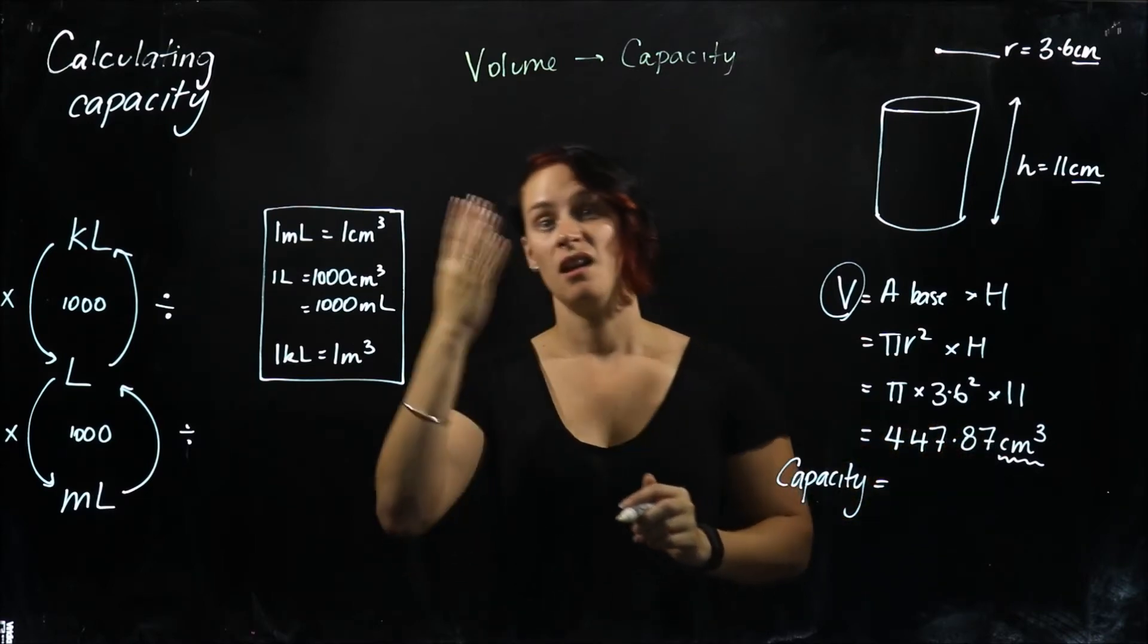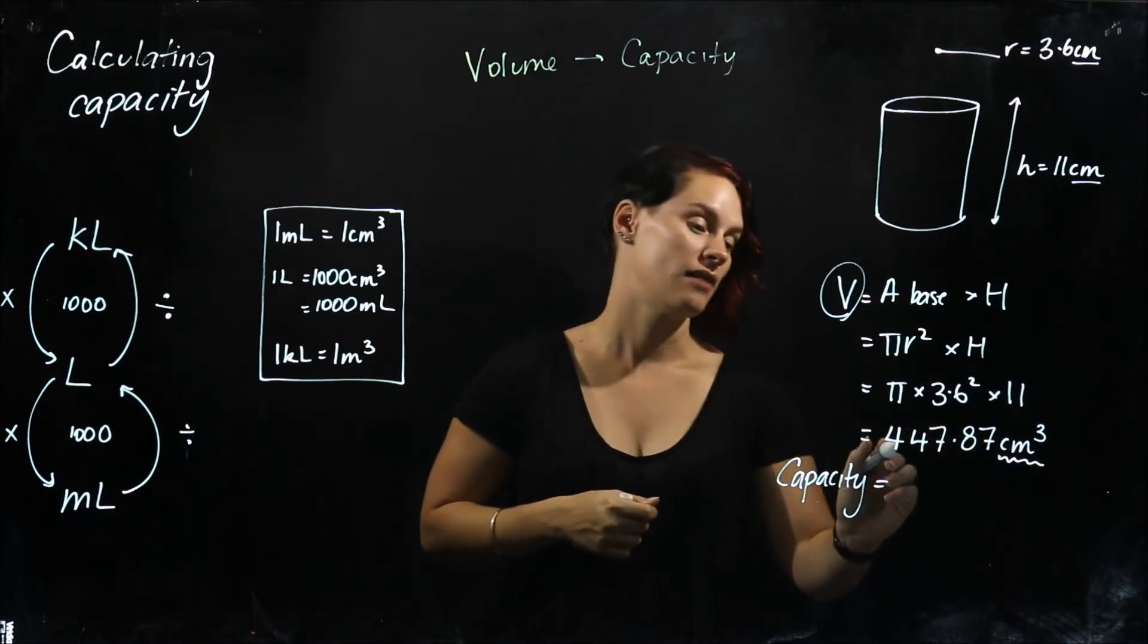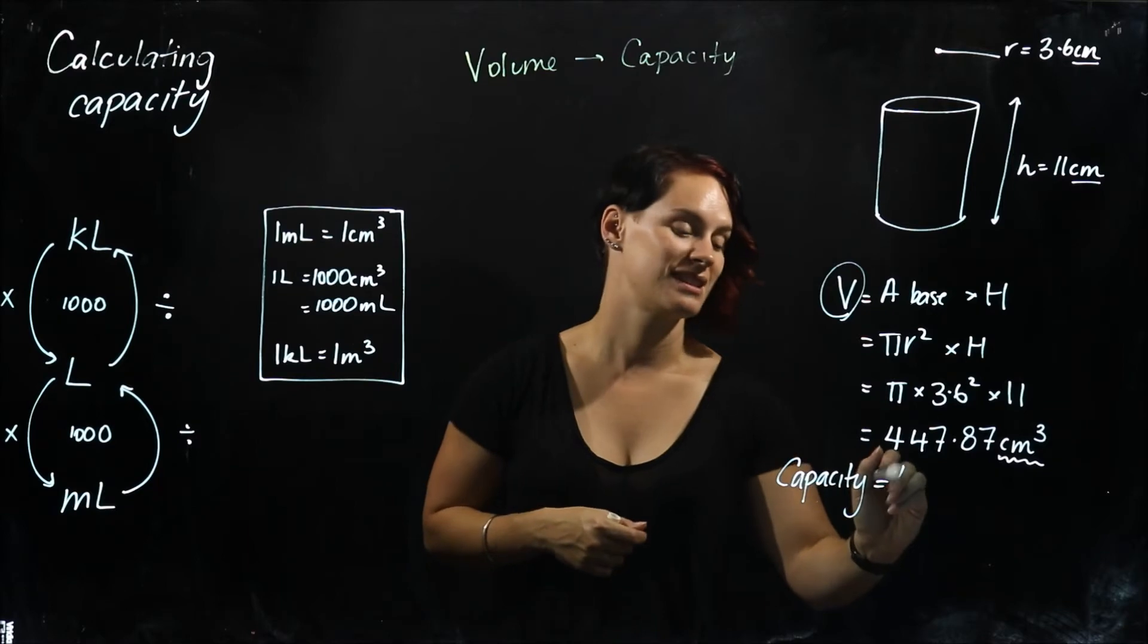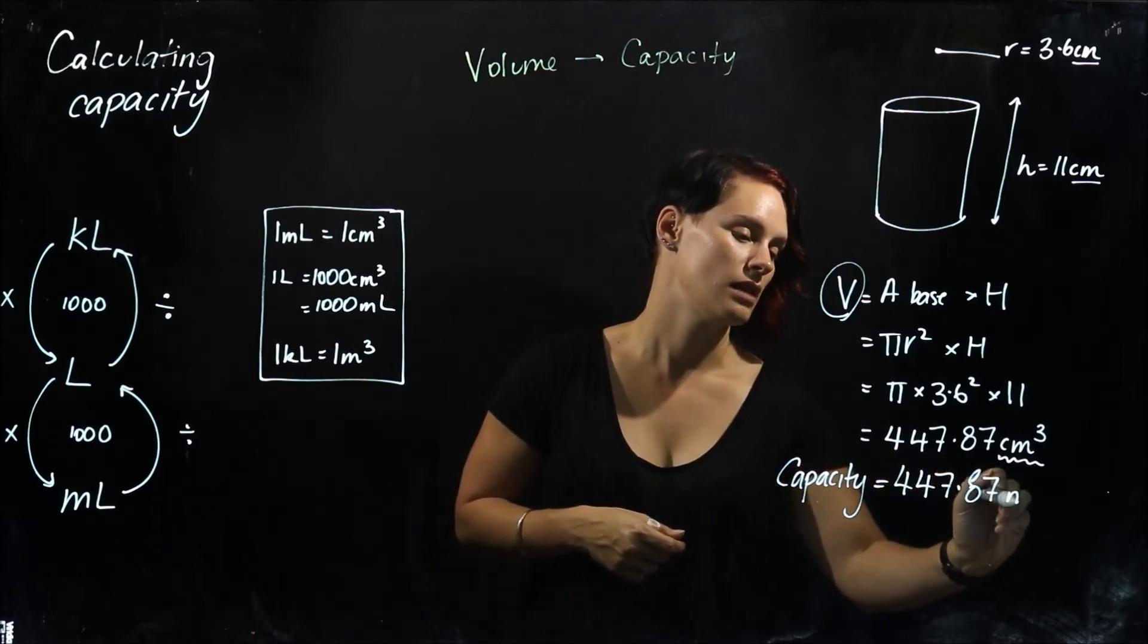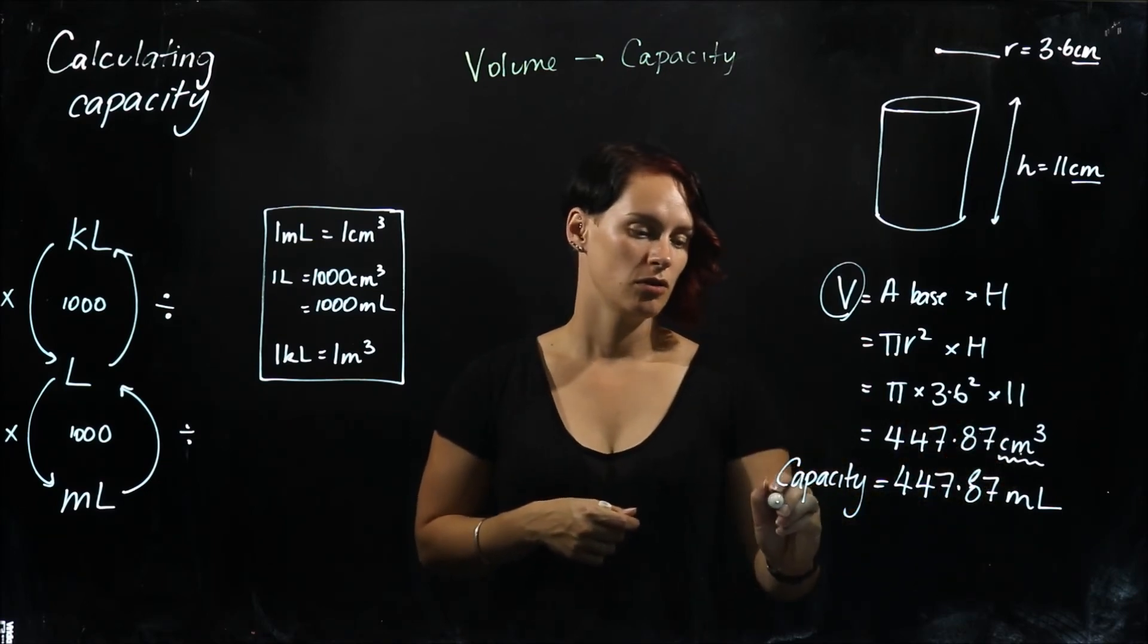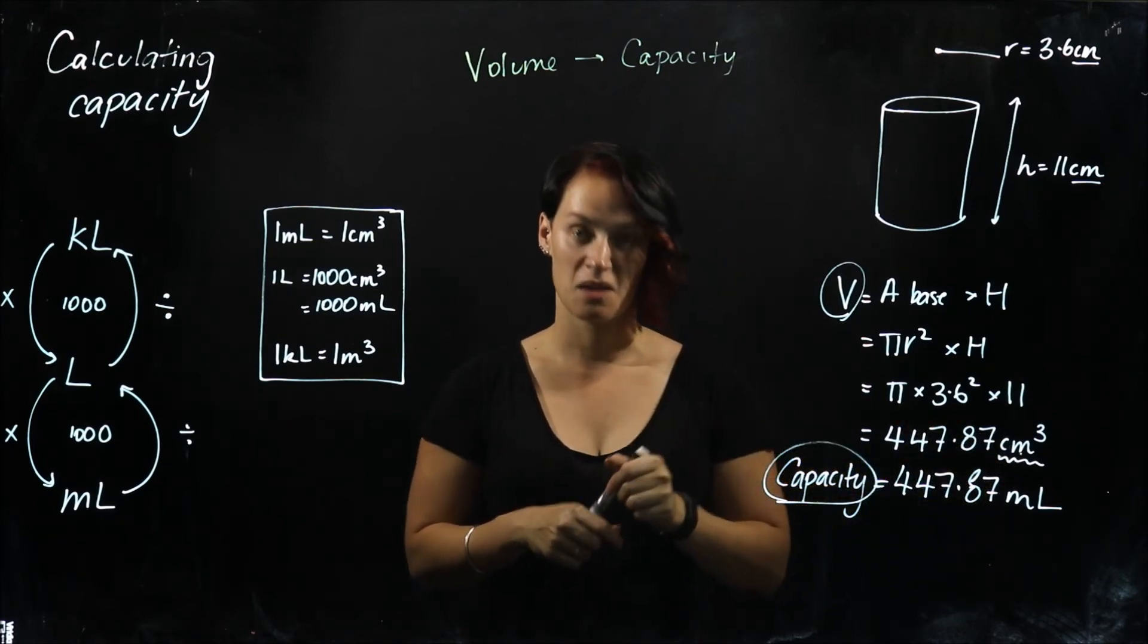If I have one cubic centimeter, I have one milliliter. If I have this many cubic centimeters, I have the same number of milliliters. So now I've converted from my units of volume into my units of capacity.